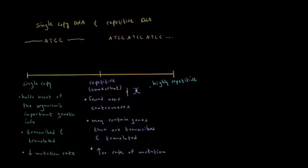And they may contain genes that are transcribed and translated, but then there might also be parts of the repetitive DNA that don't contain genes, and those parts are not transcribed and translated. And repetitive DNA has a higher mutation rate than single-copy DNA.